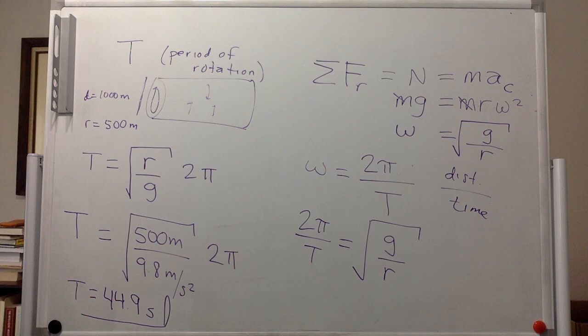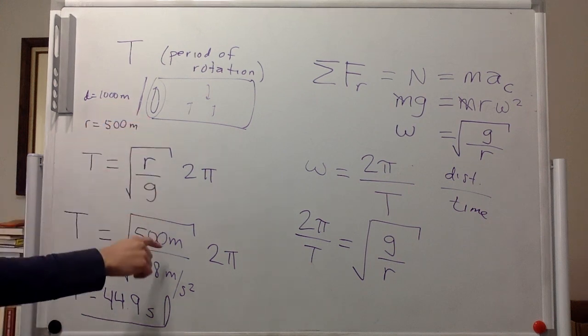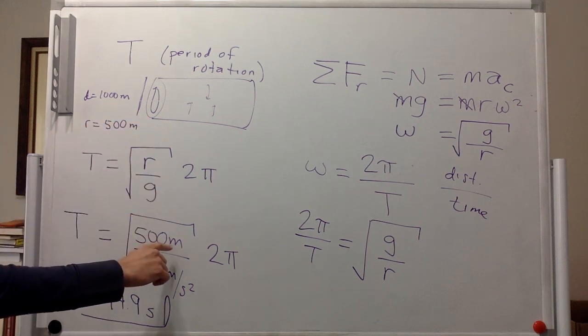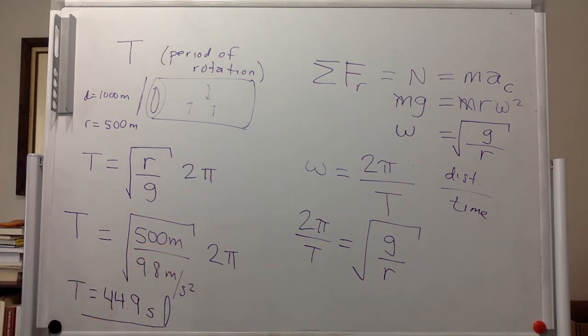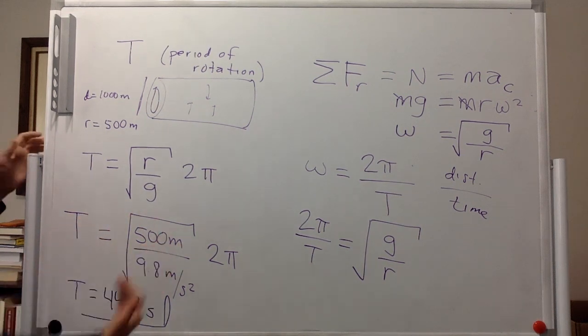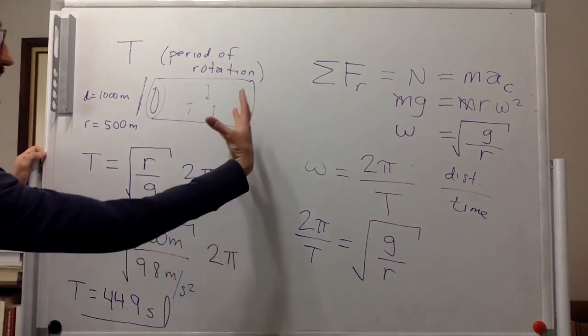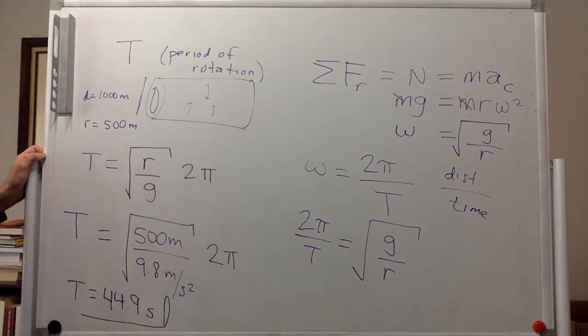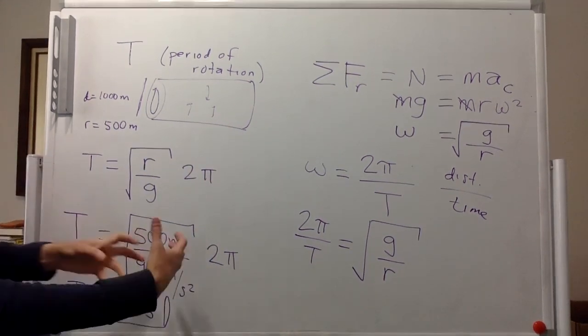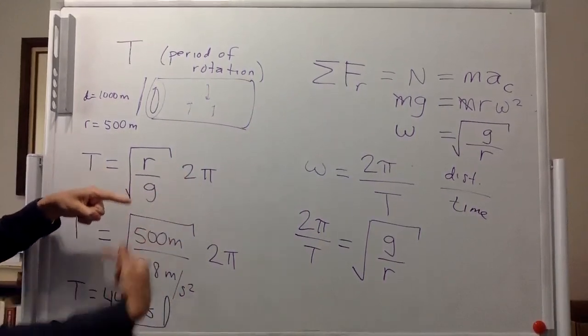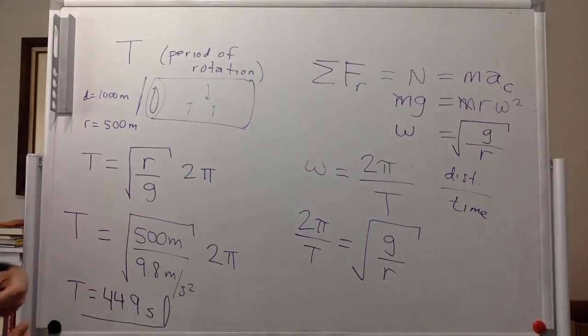So if the radius is larger, then the period will be longer. So you will have to rotate more slowly. And if it is smaller, then the period will be smaller. That means the frequency will be higher. You will have to be rotating more often.